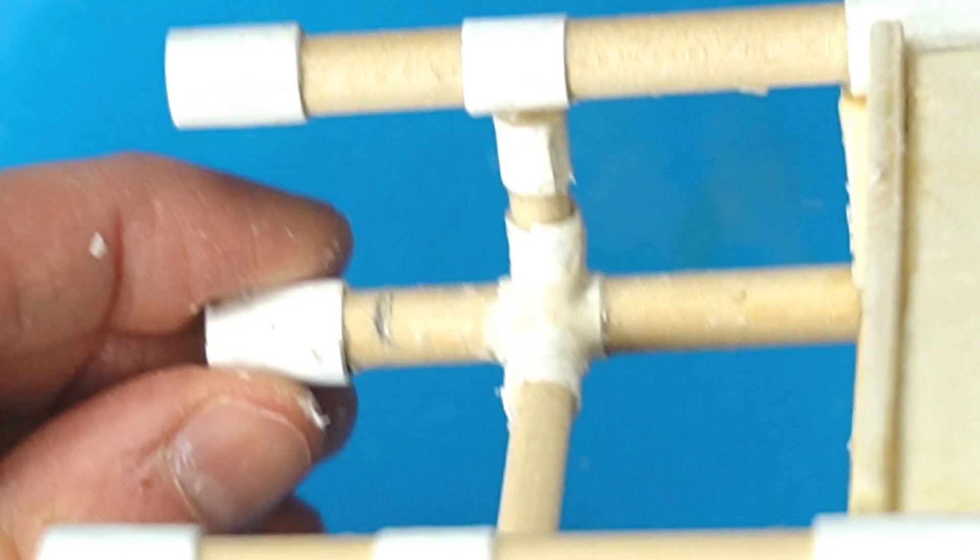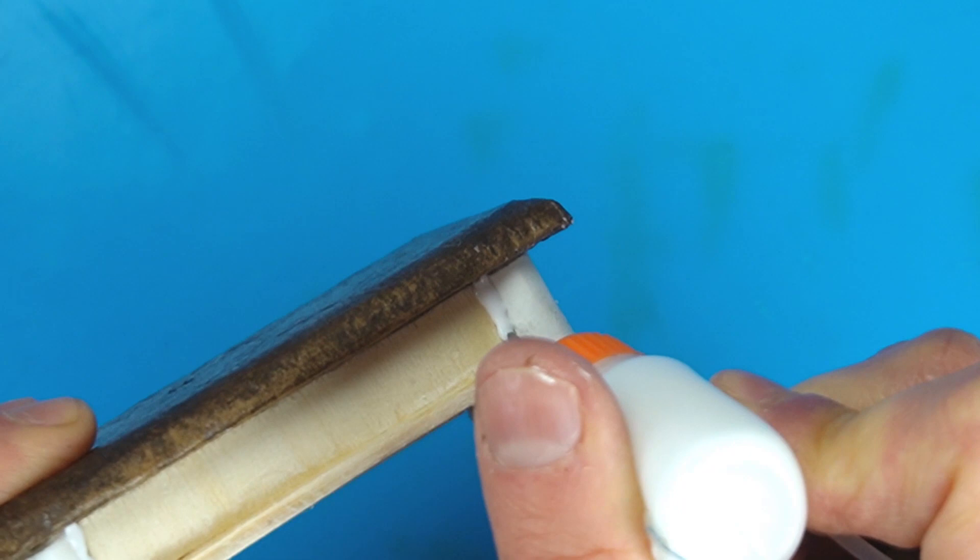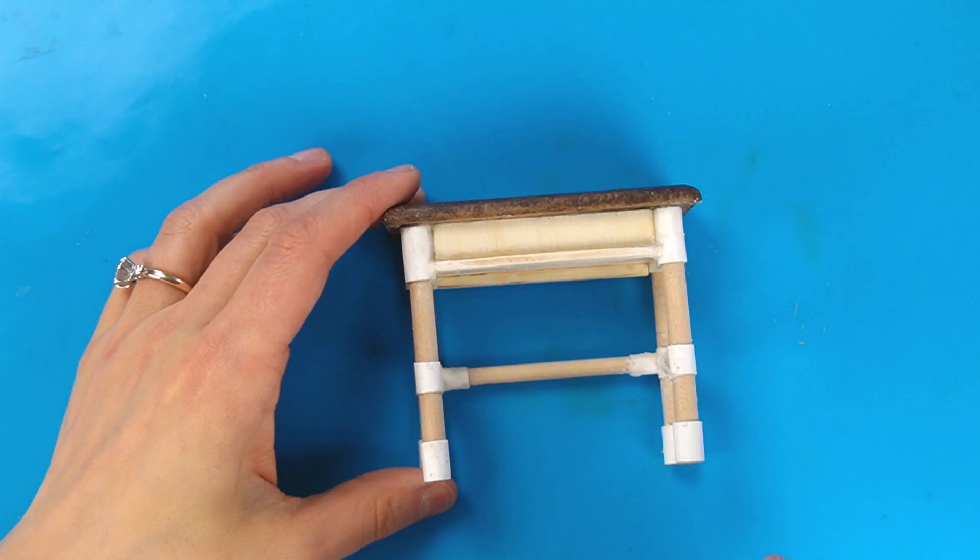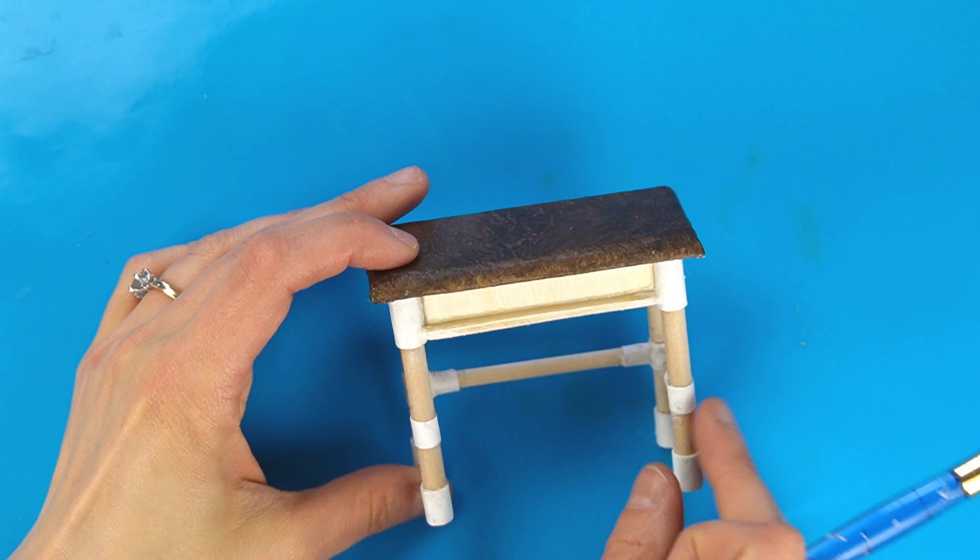I used spackle between the couplings to make the side pieces look like one piece of metal connecting the pipes. I want the table to look like it's made out of metal, so I'm using a thick bead of glue to make it look like welds on the front and the sides.